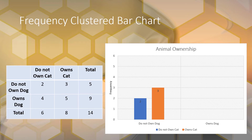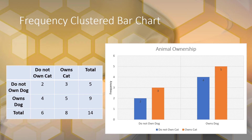Moving to the 'owns a dog' group: four people own a dog but do not own a cat, so that's the lighter orange bar. Then five people own both a dog and a cat, so that's the darker orange bar. And there we have our frequency clustered bar chart.